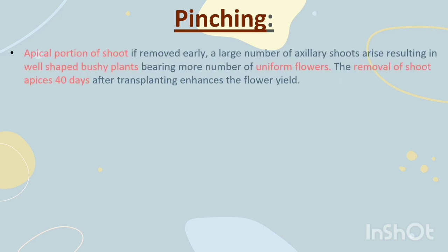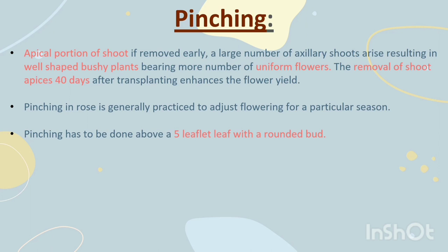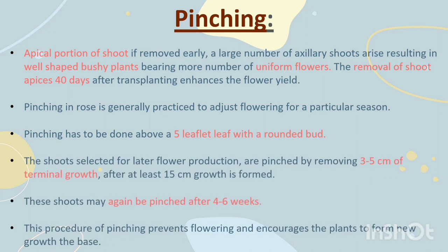Pinching. If the apical portion of a shoot is removed early, a large number of axillary shoots arise, resulting in well-shaped bushy plants bearing more uniform flowers. The removal of shoot apices 40 days after transplanting enhances flower yield. Pinching in rows is generally practiced to adjust flowering for a particular season. Pinching has to be done above a 5-leaflet leaf with a rounded bud. The shoots selected for later flower production are pinched by removing 3–5 cm of terminal growth after at least 15 cm growth is formed. These shoots may again be pinched after 4–6 weeks. This procedure prevents flowering and encourages the plants to form new growth at the base.